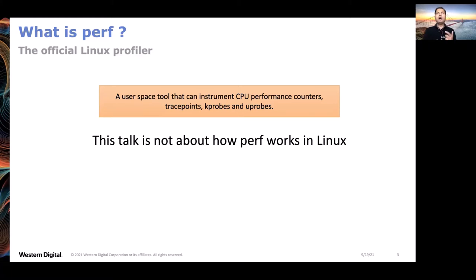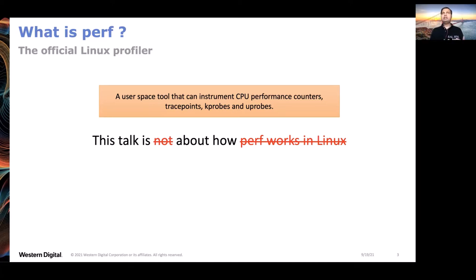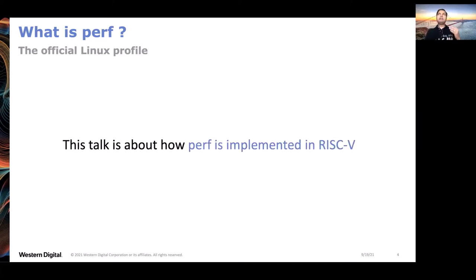This talk is not about how PERF works in Linux - there are many good tutorials by Brendan Gregg and others on the internet you can find by Googling, which go into lengthier details on what exactly PERF is and how you can use it. But this talk is about how PERF is implemented in RISC-V - specifically the performance counters in RISC-V and how PERF leverages those performance counters so that we can have a feature-complete PERF on RISC-V on par with any other architecture.